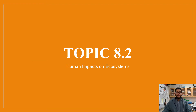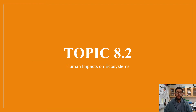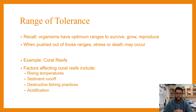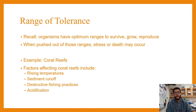Hey everybody, welcome. This is Mr. V and this is the APES review video, topic 8.2: Human Impacts on Ecosystems. We began talking about water pollution and land pollution here, and one of the things we want to mention — going back to our previous units — is range of tolerance.